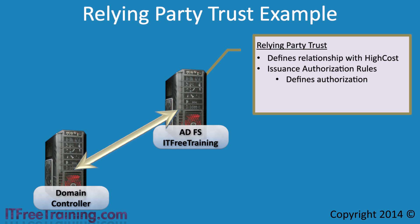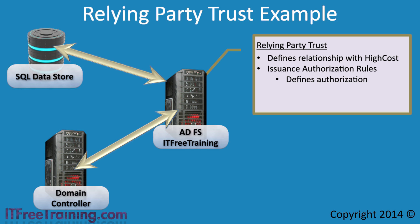Now that the user has been authorized, the next step is to determine what information will be sent to the other party in the claim. This is the part where you can see how customizable Active Directory Federation Services can be. In this example, a SQL Server is used to store data that will be used in the claim. Once the data is obtained, Active Directory Federation Services needs to know how this data should be put into the claim. To do this, an issuance transform rule is used. An issuance transform rule essentially converts the data to the form required in the claim, but it can also be used to change data as required. The authorization rule is pretty straightforward — it defines who has access.